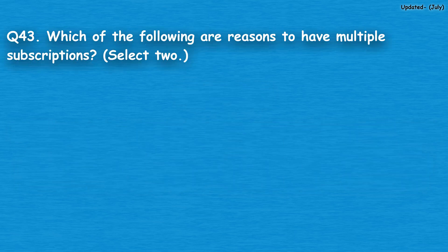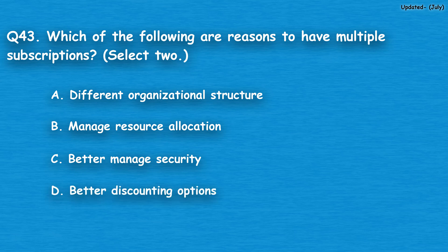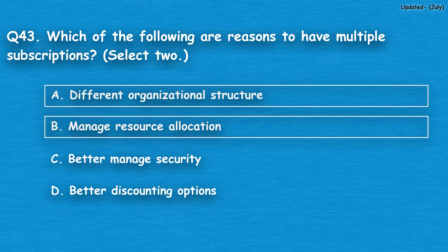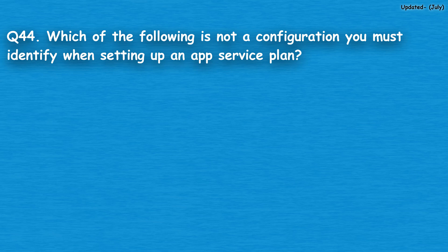Question number 43: Which of the following are reasons to have multiple subscriptions? Select two. Option A: different organizational structure, option B: manage resource allocation, option C: better manage security, option D: better discounting options. The correct answers are option A, different organizational structure, and option B, manage resource allocation. Users prefer multiple subscriptions when many organizations exist, causing a variety of resources to be billed to an account instead of a master account, helping each team, project, or cost center fully realize their spending.